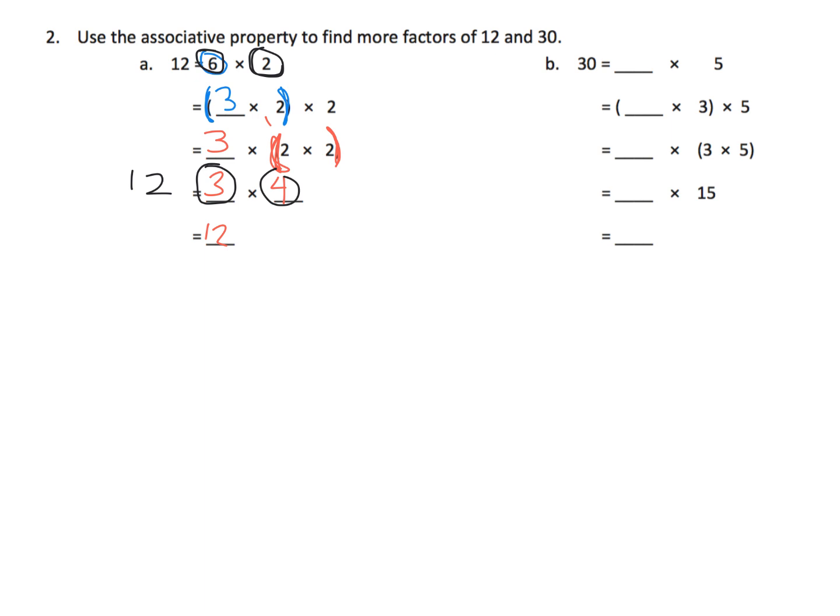So that's not a way to find all of the factors. It's just a way to find more of the factors of 12. Let's try that on B. So we're going to start with 30 is equal to blank times 5. Well, that's 6 times 5. Now we're going to decompose or factor that 6 to become 2 times 3 times 5.